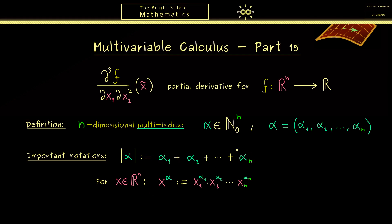You can see we can use the multi-index notation to describe a polynomial in several variables. In the end we want to be able to describe the Taylor polynomial for a function f from ℝⁿ to ℝ, and exactly for this reason we also need the factorial for a multi-index. This is defined by using the factorials of the components: α! = α₁! × α₂! × … — again simply a product of natural numbers.